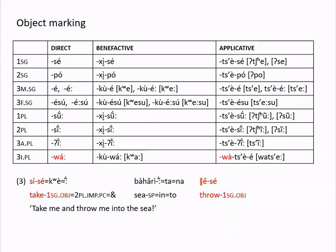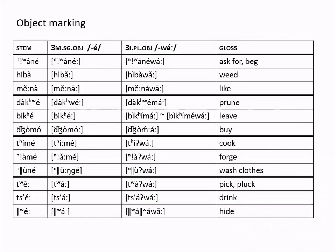In general, the first and second person object morphemes for both singular and plural act as expected when suffixed to different verb stems. However, the third person singular and plural forms are much less predictable. Grouped by their morphophonological behavior, the first group is the simplest: the vowel is lengthened when the third person masculine singular object morpheme is added, and when the third person inanimate plural object morpheme is attached there's no assimilation, just tonal changes.